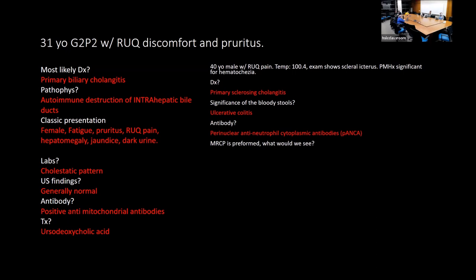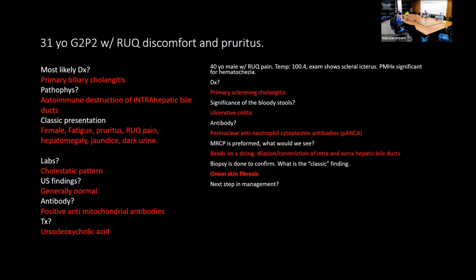MRCP in PSC classically shows dilation and constriction of the intra- and extrahepatic ducts — 'beads on a string.' Biopsy shows onion-skin fibrosis. Management includes colonoscopy, since 90% of PSC patients have inflammatory bowel disease. Ursodiol can be used but doesn't help that much. ERCP can dilate strictures, but there's no great treatment overall.